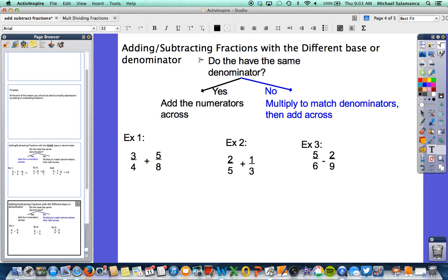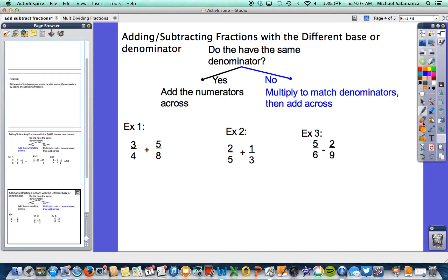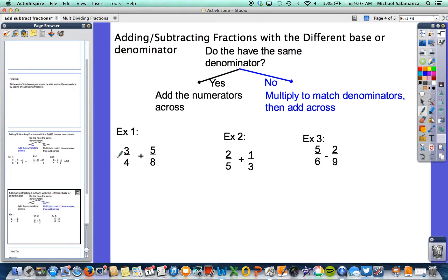So now let's look at adding and subtracting fractions with a different base, or a different denominator. So this answers the question, do they have the same denominator? We're only looking at the nodes for now. So if you look at example 1, it says 3 fourths plus 5 eighths. Clearly their denominators are not the same. One is 4, one is 8. So in this instance, we're looking for them to have the least common denominator.